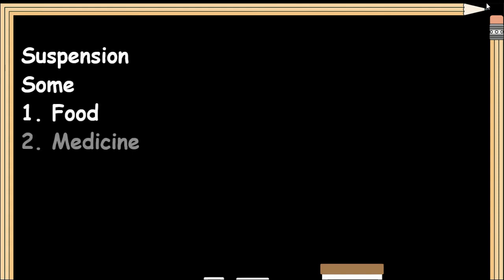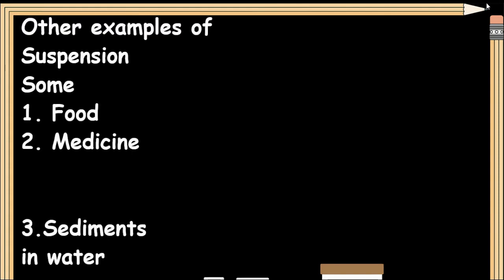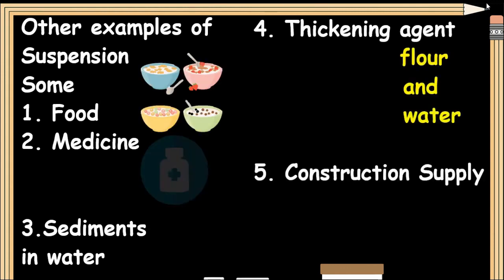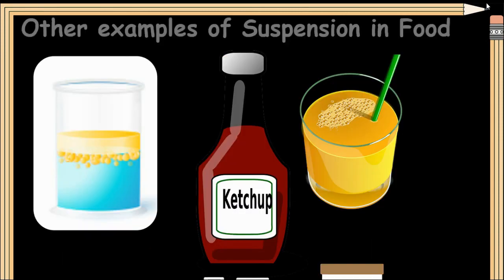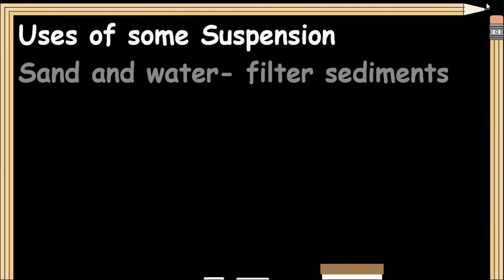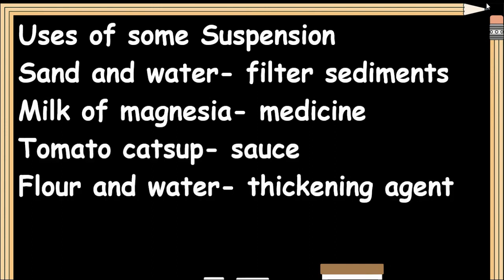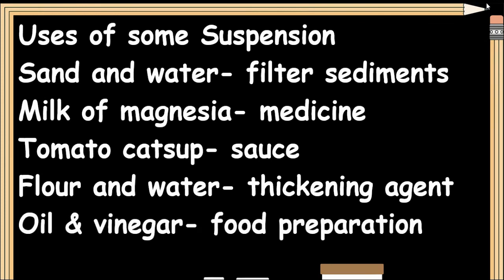Other examples of suspension include: some food, medicine, sediments in water, thickening agents, flour and water, and construction supplies. Uses of some suspensions: sand in water to filter sediments, milk of magnesia as medicine, tomato ketchup as a sauce, flour and water as a thickening agent, and oil and vinegar for food preparation.